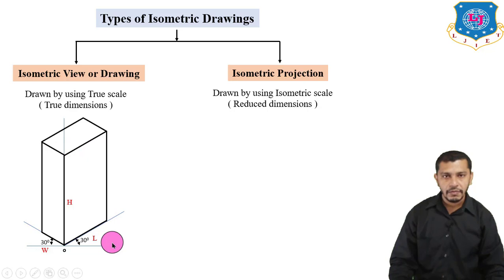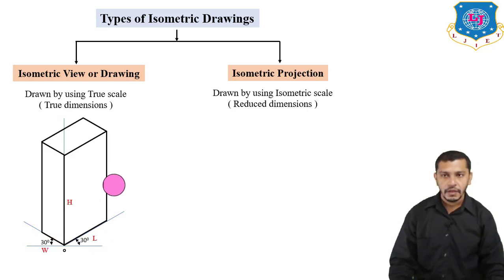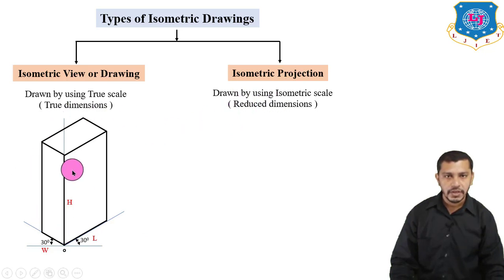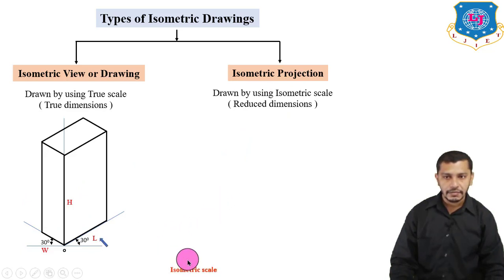By using this method we draw the isometric view or isometric projections of the object, starting with the isometric axis first. Now for isometric projections, we draw the same figure using the isometric scale or isometric dimensions. For that, we have to draw the isometric scale first. To draw the isometric scale, first draw a baseline.